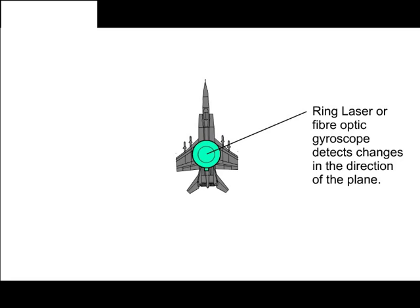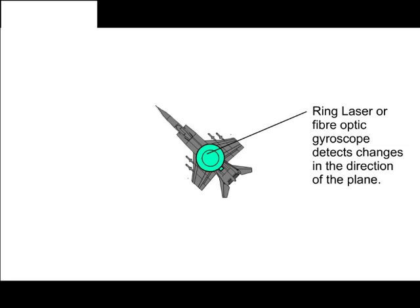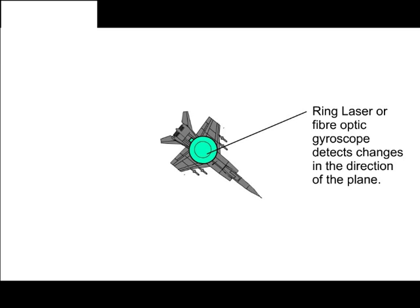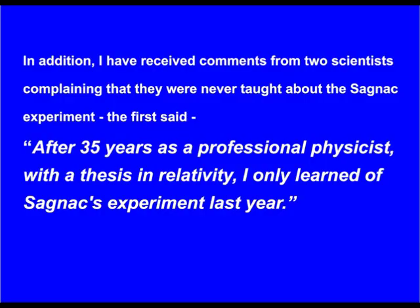This Sagnac effect is used by airlines for their compass directions. As the plane turns, the change in the fringes are translated into a change in the direction of the plane that then registers on the cockpit compass.